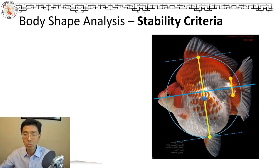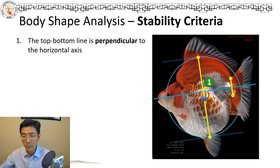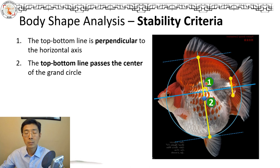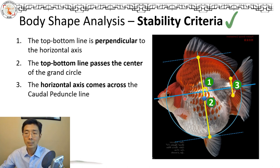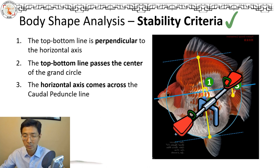The criteria are pretty straightforward. The first one: the horizontal X needs to be perpendicular to the line connecting your upper back point and the bottom belly point — that needs to be perpendicular. That's criteria one. The second criteria: the top-bottom line needs to pass through the center of your grand circle. The third criteria: the horizontal X crosses the caudal peduncle lines. So all three together create a seesaw effect — you want the weight and shape balanced around the center of your grand circle, also called the mass center or gravity center of the fish.